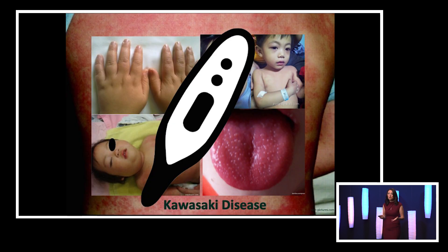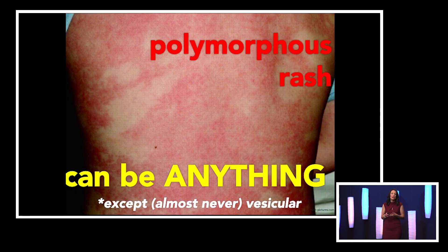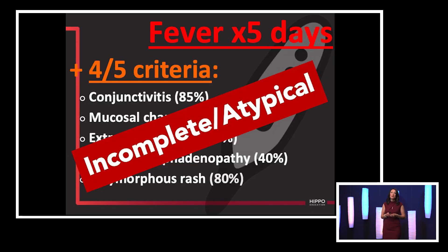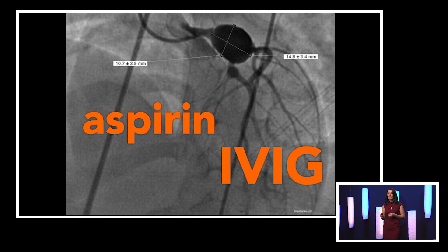Another important systemic disease to think about any time you see a child with a rash and fever is Kawasaki's disease, because early diagnosis can decrease the incidence of coronary artery aneurysms. These patients have four out of five of the following criteria: conjunctivitis, mucosal changes, extremity changes, cervical lymphadenopathy, and a rash. The rash can look like anything, so you have to consider this diagnosis or you won't make it. You can also have incomplete or atypical Kawasaki's where kids don't have all the criteria or haven't been febrile for five days — this is more common in infants. Treatment is aspirin and IVIG.